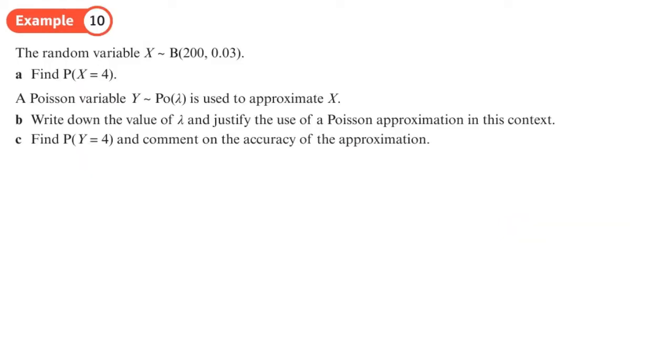Right, let's try some questions. The random variable X where X is a binomial distribution with n equals 200, p equals 0.03. Find the probability that X equals 4. In part A, I'm going to work out what it is exactly using my calculator, so I'm not approximating anything yet. In the past you wouldn't have been able to do this question without an approximation because the table doesn't go up to n equals 200.